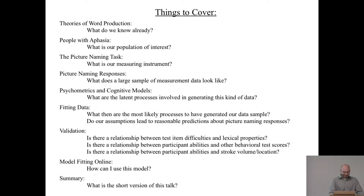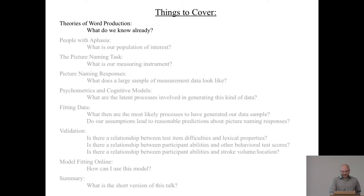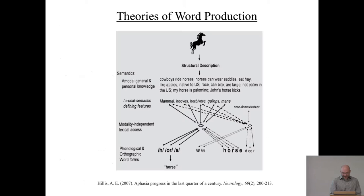We'll look at some validation for our model: is there a relationship between test item difficulties and lexical properties, between participant abilities and other behavioral test scores, and between participant abilities and stroke volume and location. We'll talk about how to use this model online, and of course end with a summary. Let's dive in with theories of word production.